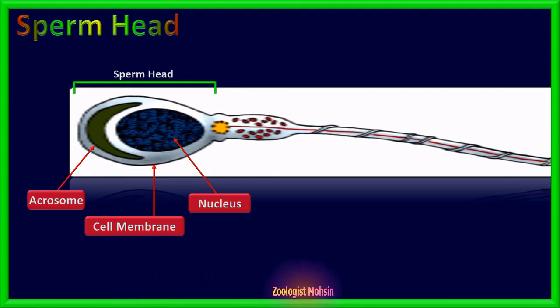The acrosome is produced from cells of Golgi bodies and is equipped with digestive enzymes. These acrosomal enzymes have the ability to digest proteins and complex sugars present outside the egg cell during penetration. Acrosome and nucleus together form the sperm head.